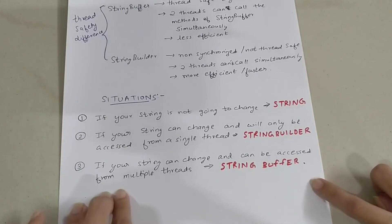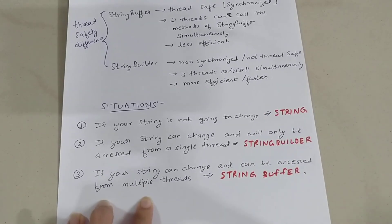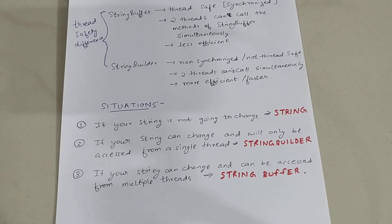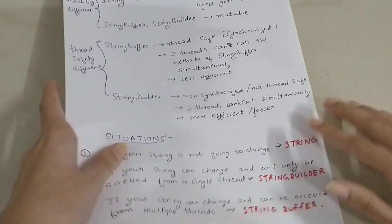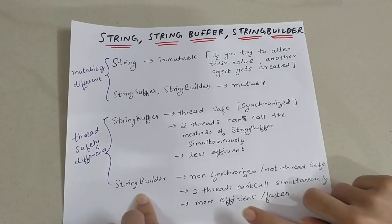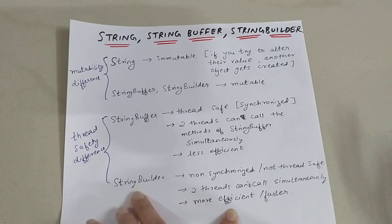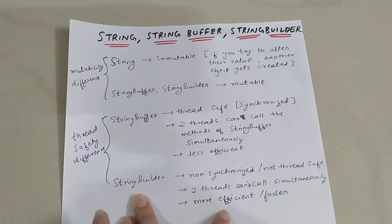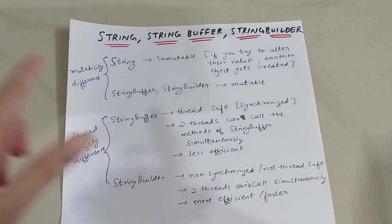StringBuffer should be used when the value of the string can be changed and can be accessed from multiple threads. Also, StringBuilder is more efficient and faster than StringBuffer, because it is non-synchronous — multiple threads cannot call it simultaneously — whereas StringBuffer is less efficient due to its synchronization overhead.